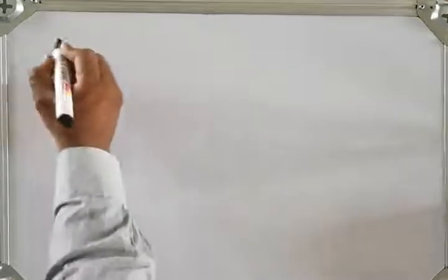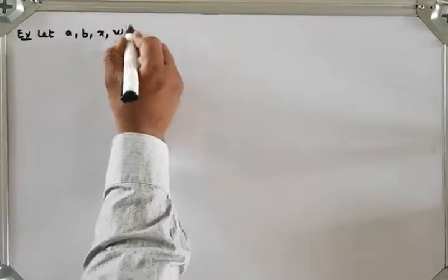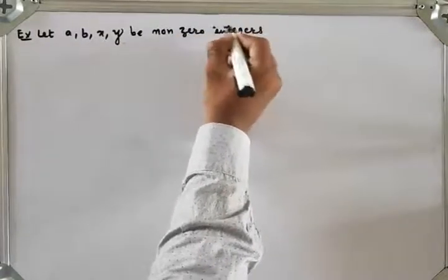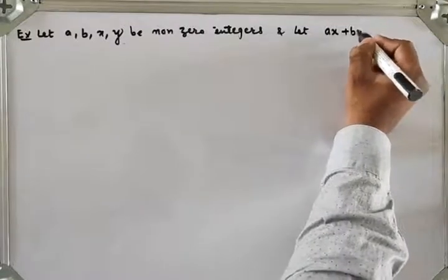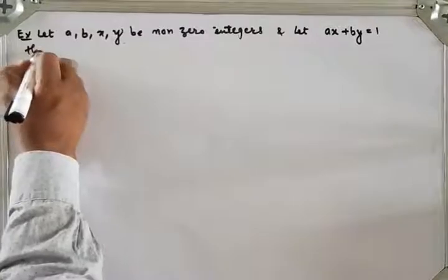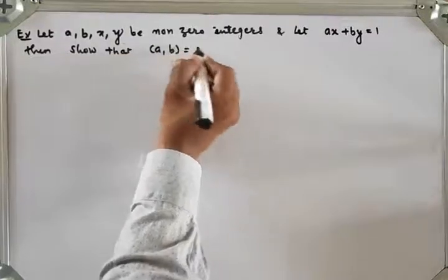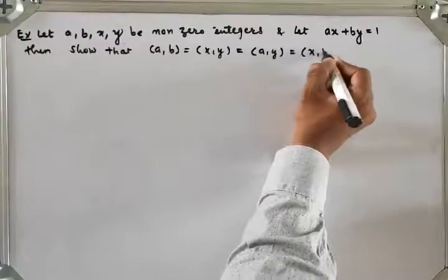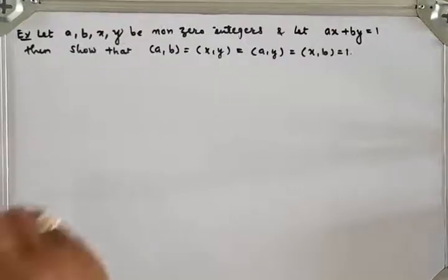Let us see examples. Let A, B, X, Y be non-zero integers and let we have the equation AX plus BY is equal to 1. Then show that GCD of AB is same as GCD of XY, GCD of AY, and GCD of XB is equal to 1. So we will do this solution.